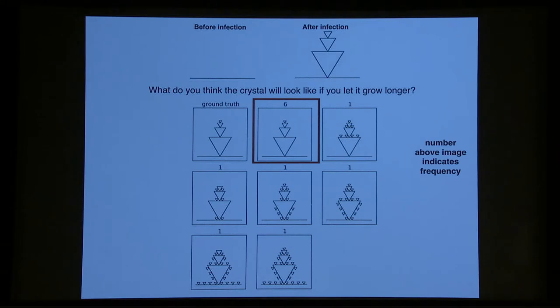In the latent group, if you just see the before and the after, the growth, and then are asked to make a completion and generate a new example, six people out of 12, in this case, still got it right. Which is pretty good. As you can see, there's a lot of other interesting creations by the other participants.